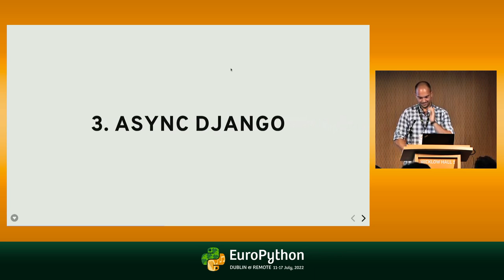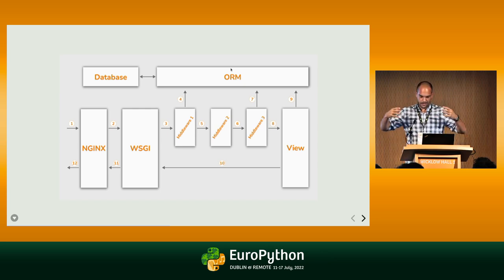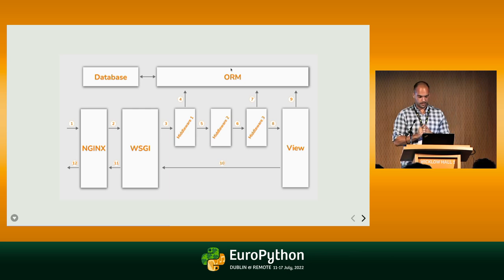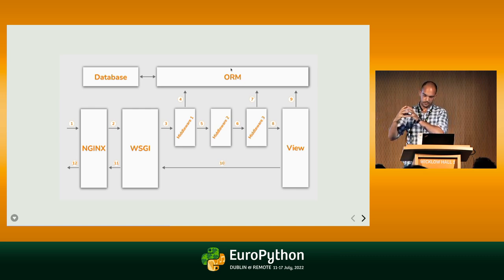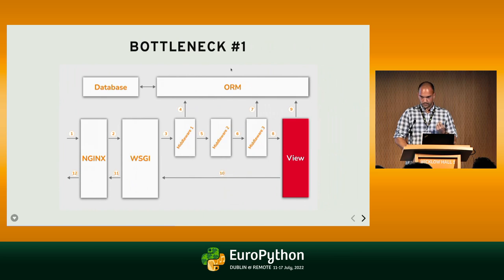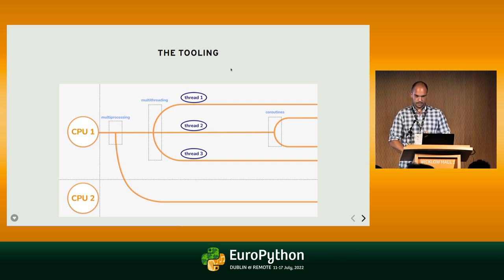Async Django. This picture shows on a high level what's happening in the request-response cycle in Django. We have NGINX that behaves like a load balancer. Then the request goes to the WSGI, moves through a chain of middlewares, hits our view with the business logic, and meanwhile communicates with the ORM. The first bottleneck of introducing asynchronous behavior in Django is the views, and our tools are processes, threads, and coroutines.